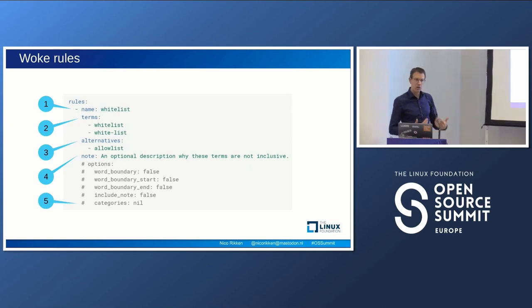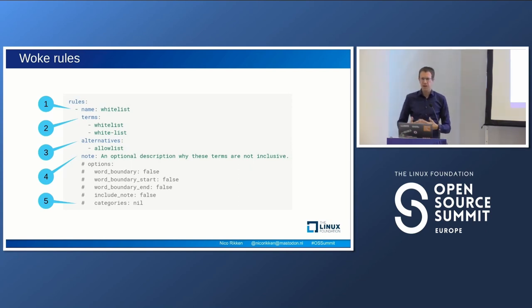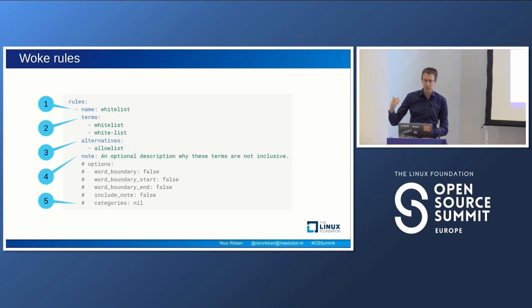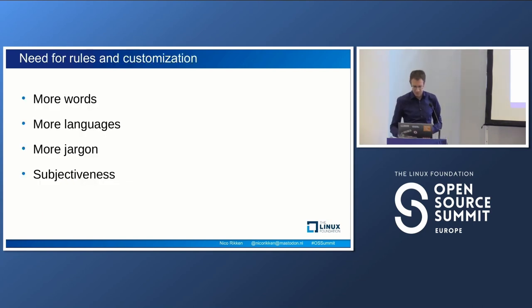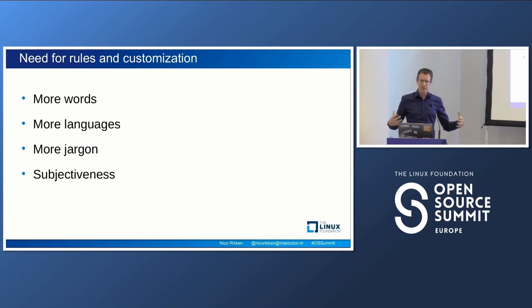All of this is backed by rules that determine what terms to look for, what the alternatives are, and a note to instruct the user. There's also the option for categories, so you can filter — say you have a long list of rules within your organization and only want to check for certain types.